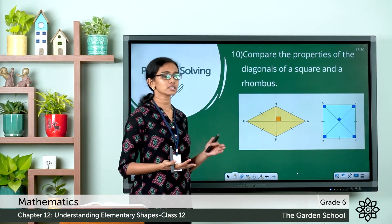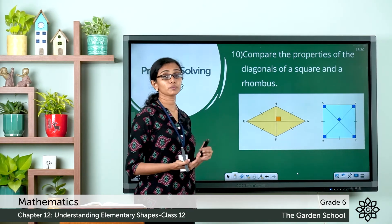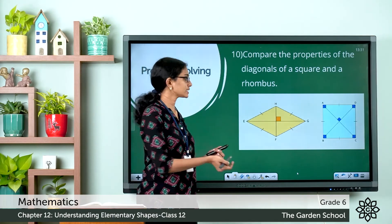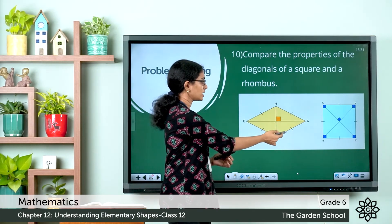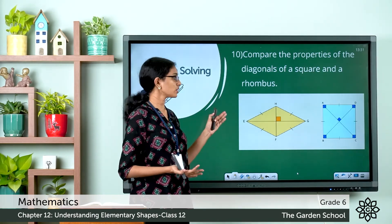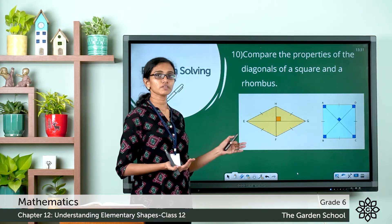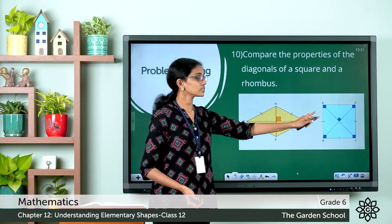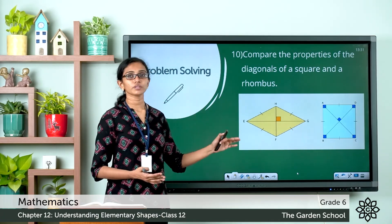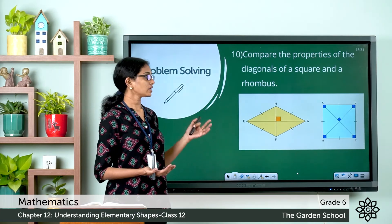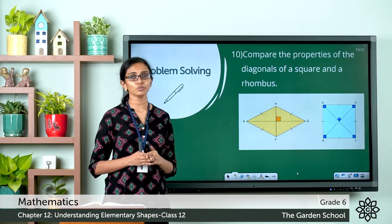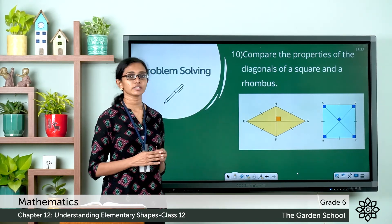A rhombus has two diagonals that are not necessarily equal in length, but they intersect each other at right angles. The opposite interior angles of a rhombus are equal but are not right angles. When a rhombus has all interior angles equal to 90 degrees, it becomes a square. So a square is a rhombus with all four sides equal and all interior angles as right angles. Compare the two shapes and write down their properties in your notebook.